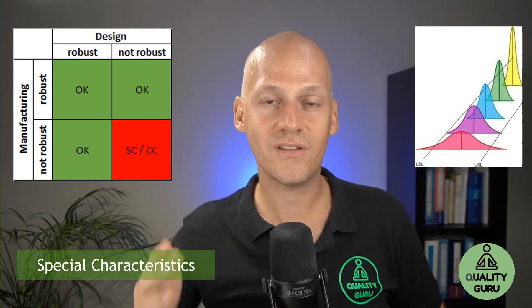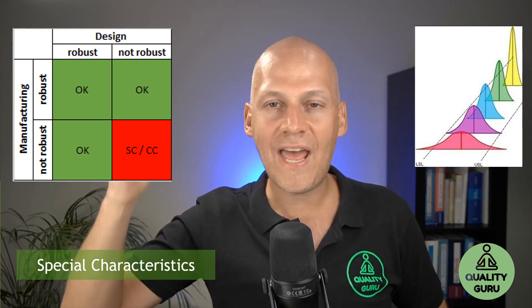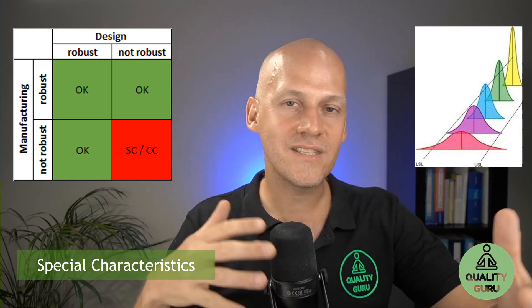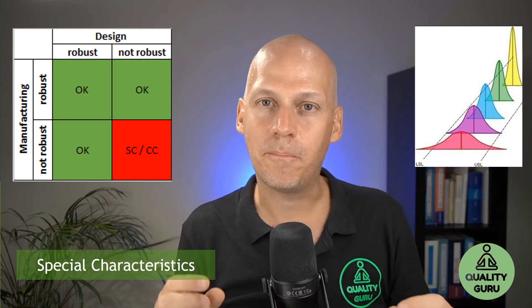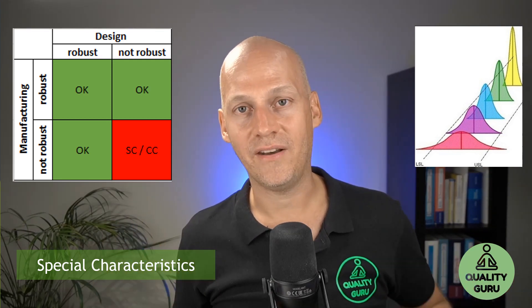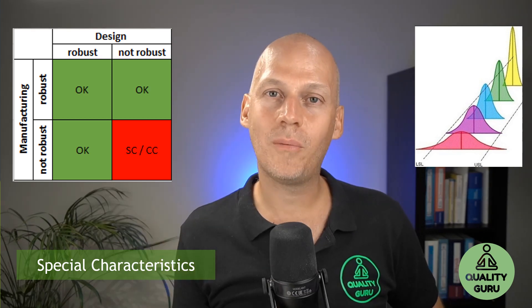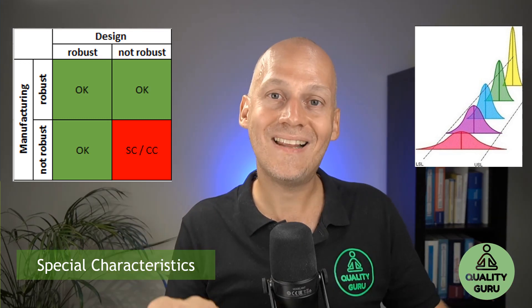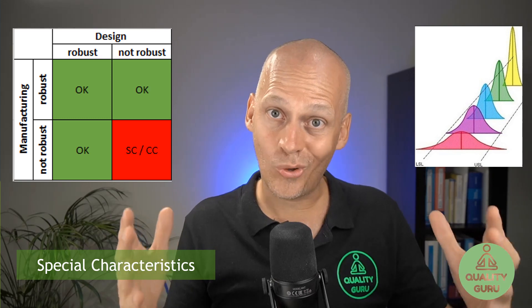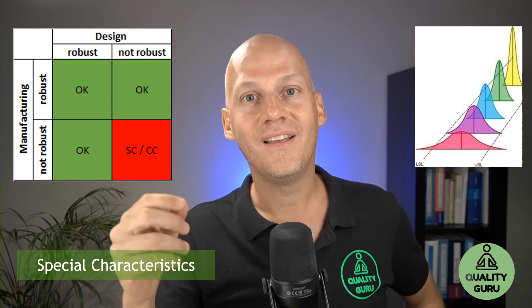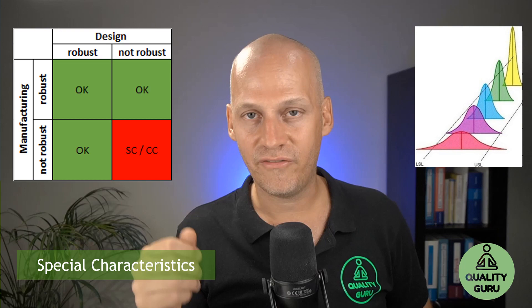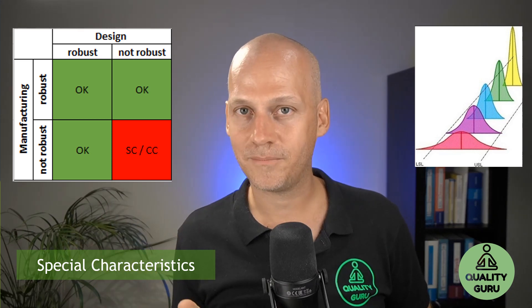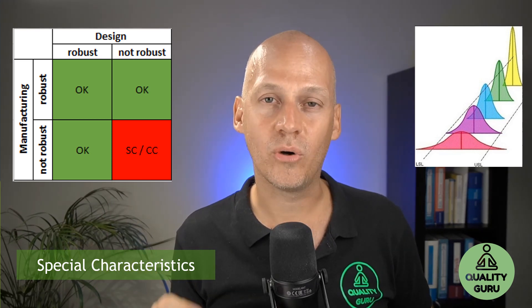If the temperature changes and the part loses its function, the design is not robust. On the other hand, a robust design means that whatever happens — weather changes, materials vary, dimensions shift — the part still maintains its planned function. When you have a robust design, there is no problem, because the design already ensures that the functionality needed to avoid legal, safety, or functional issues is always given.